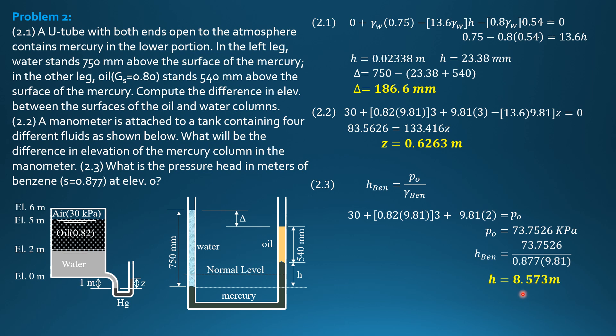That's the equivalent pressure. In other words, the pressure at elevation zero is 0.877 times 9.81 times 8.573.